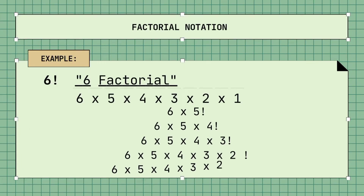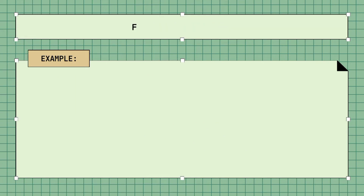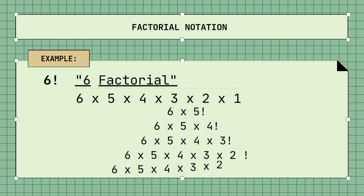For example, the factorial of number 6 is written and can be read as 6 factorial, and is equal to 6 times 5 times 4 times 3 times 2 times 1, which equals 720. It can be written in 6 ways, such as 6 times 5!, 6 times 5 times 4!, 6 times 5 times 4 times 3!, 6 times 5 times 4 times 3 times 2!, and 6 times 5 times 4 times 3 times 2 times 1. All of these equal 720.